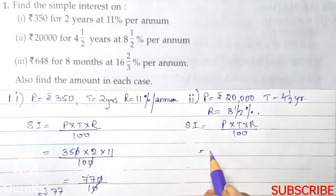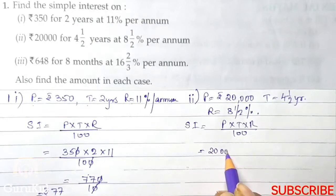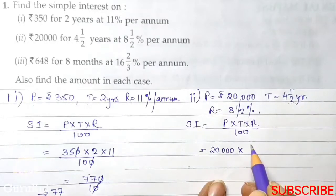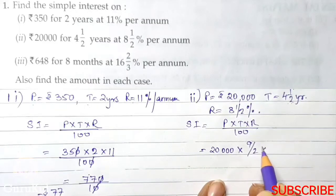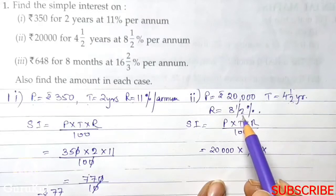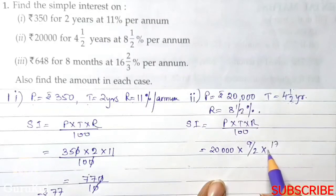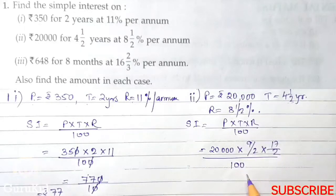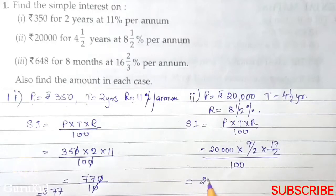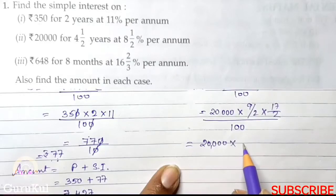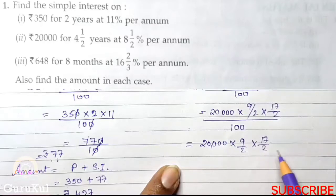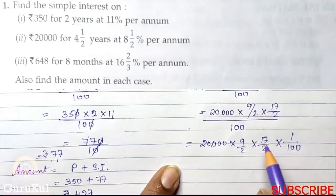So, let's start. P is 20,000 into time, time becomes 9 by 2 into rate is 8.5, so it becomes 17 by 2 by 100. Now we can evaluate this way, 20,000 into 9 by 2 into 17 by 2 into 1 by 100.